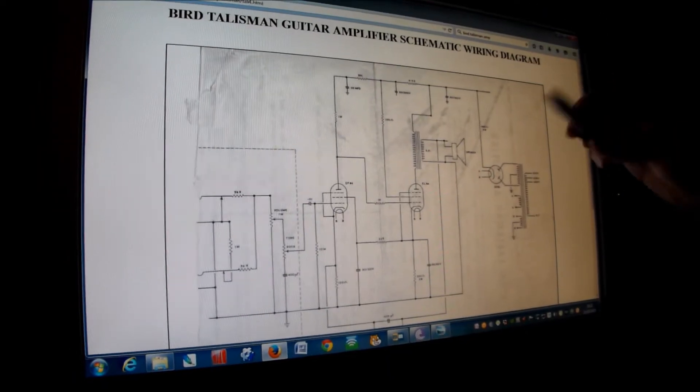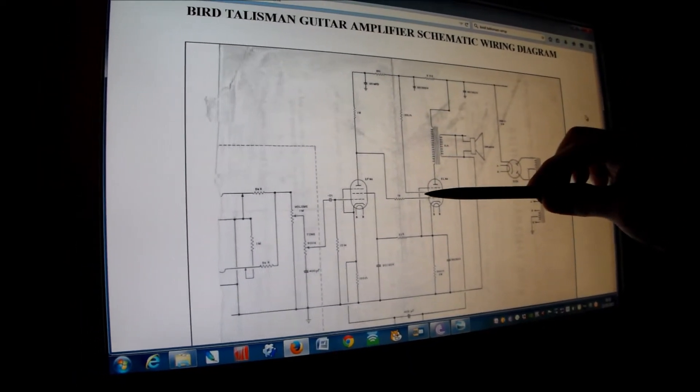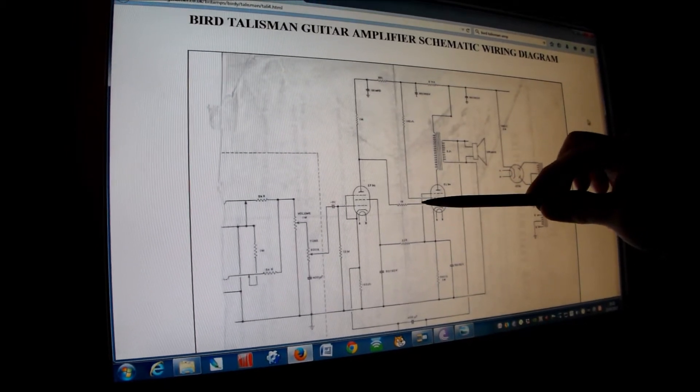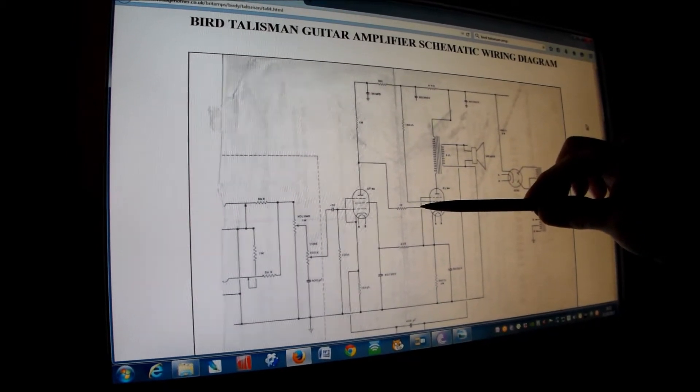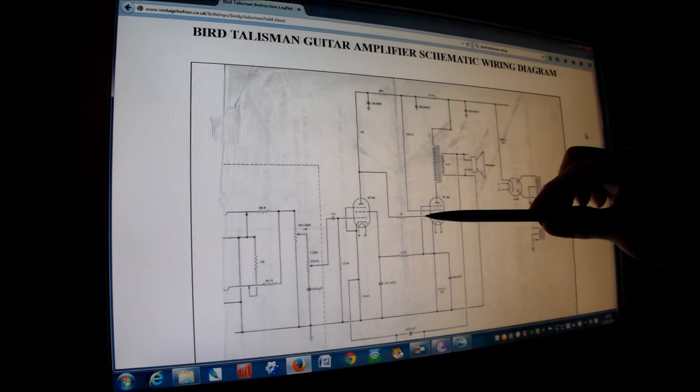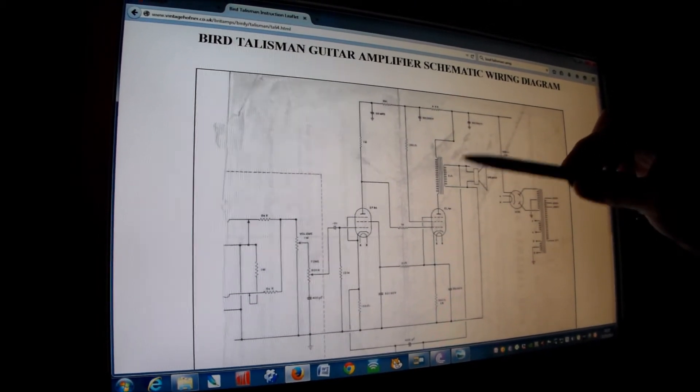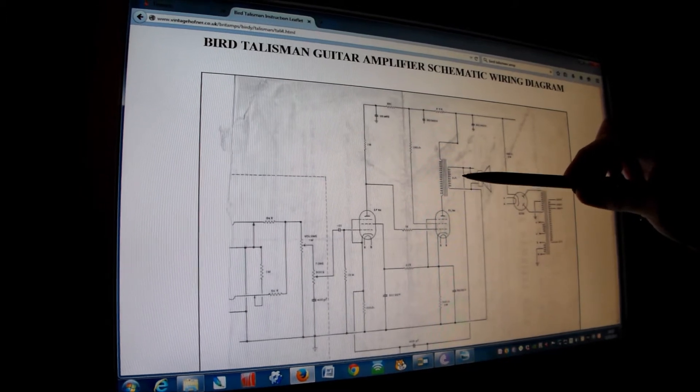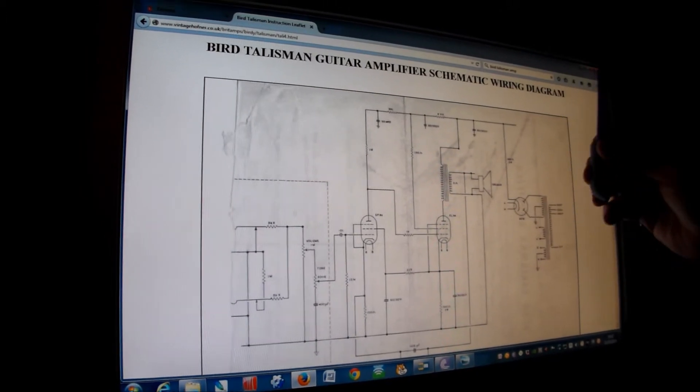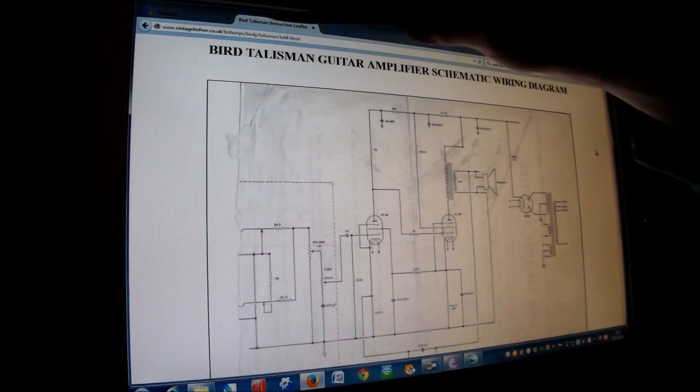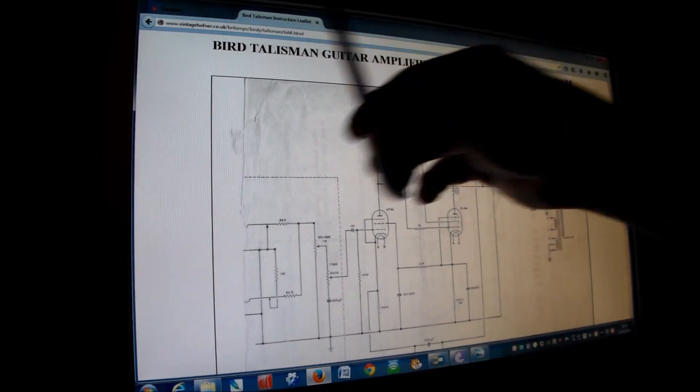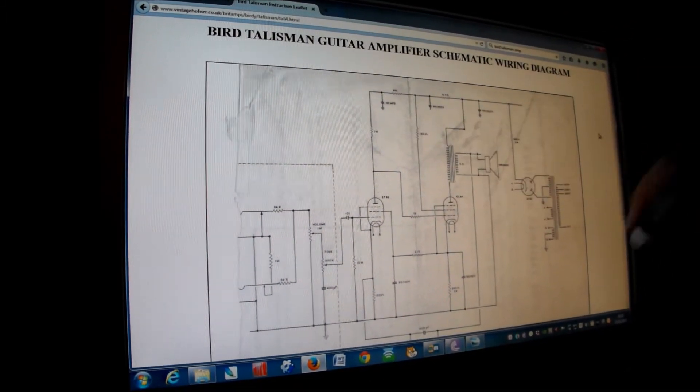Now we go over to the circuit diagram. An EL84 does need to have seven to eight volt difference between its control grid and cathode. In this particular circuit diagram, kindly put up by Vintage Hoffner Bird Talisman Guitar Amplifier Schematic, which is what we want.